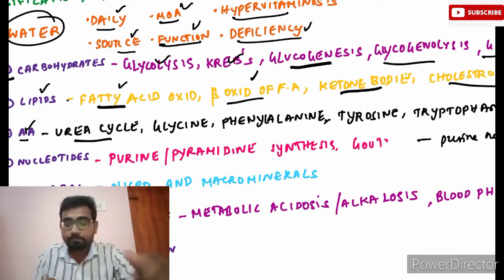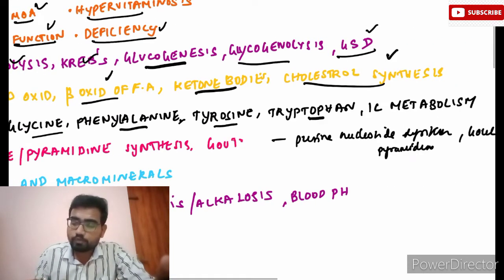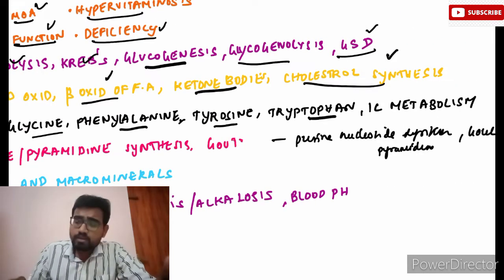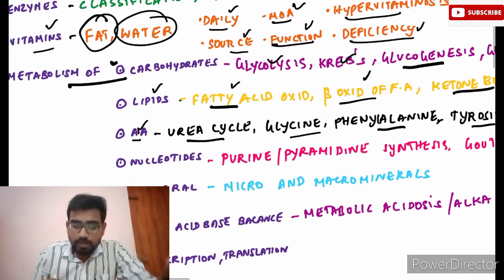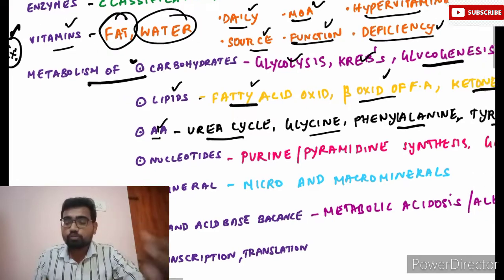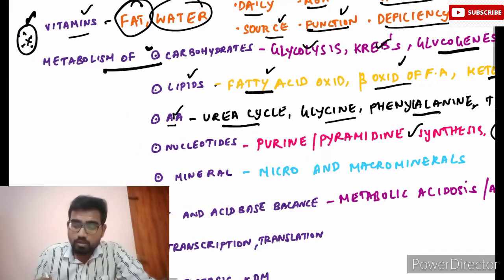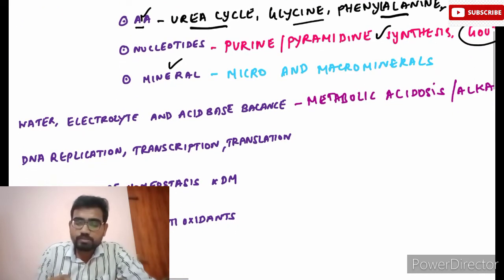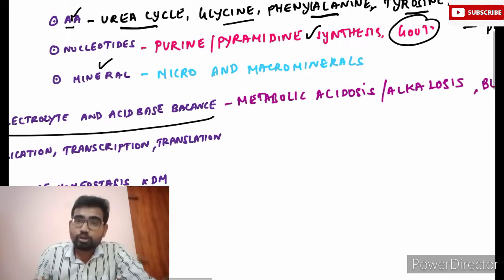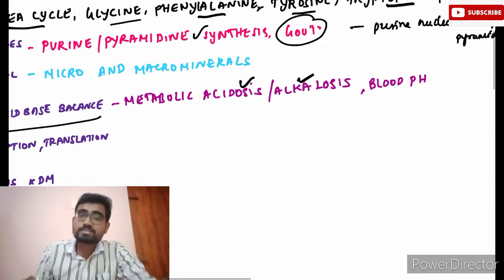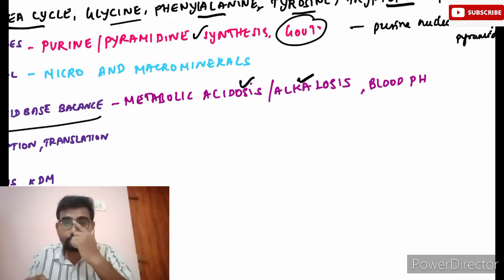For amino acid metabolism, read about the urea cycle and important amino acids like glycine, phenylalanine, tyrosine, tryptophan, and one-carbon metabolism. For nucleotides, read about purine and pyrimidine synthesis and gout — the increase in uric acid. Then cover minerals, both micro and macro.